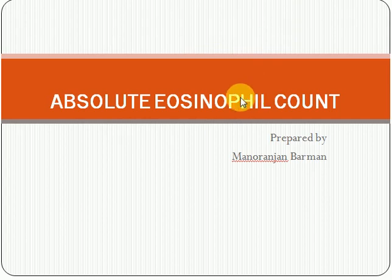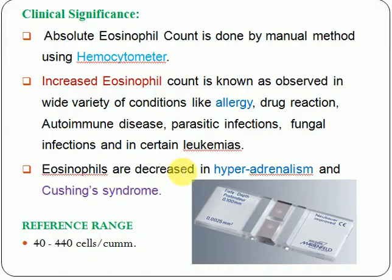Eosinophil is a type of blood cell which is categorized under WBC, that is white blood cells, or you can say leukocytes. Now, starting with the clinical significance, absolute eosinophil count is done mainly by the manual method.